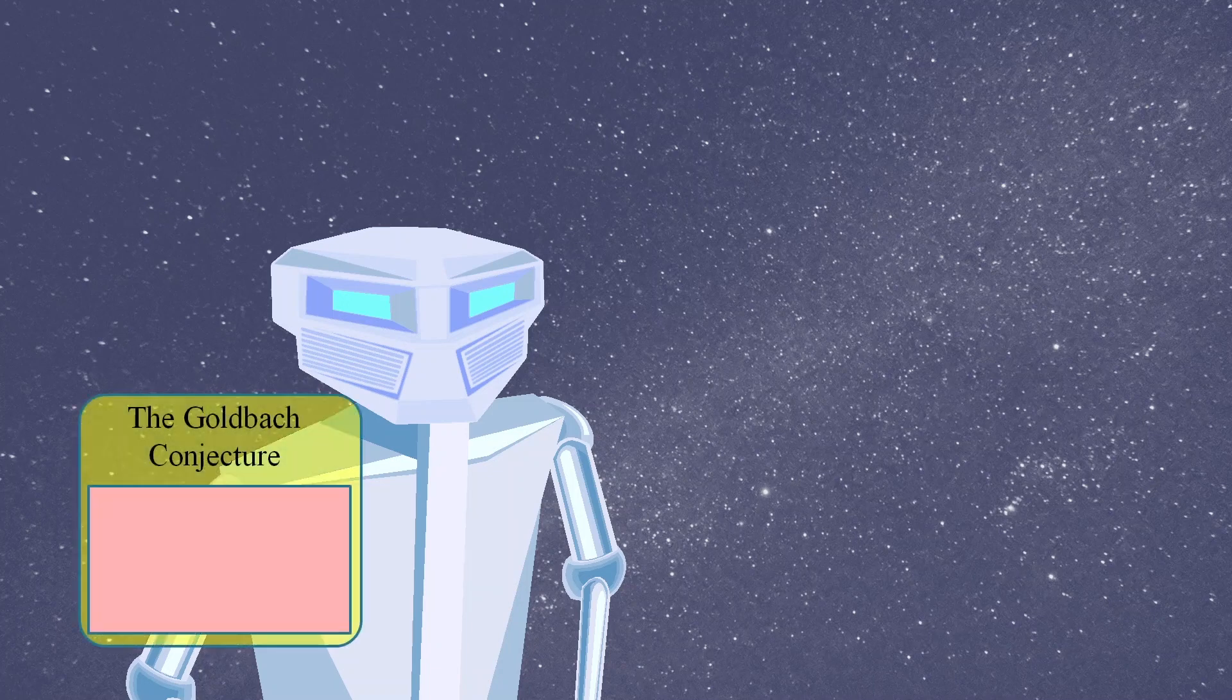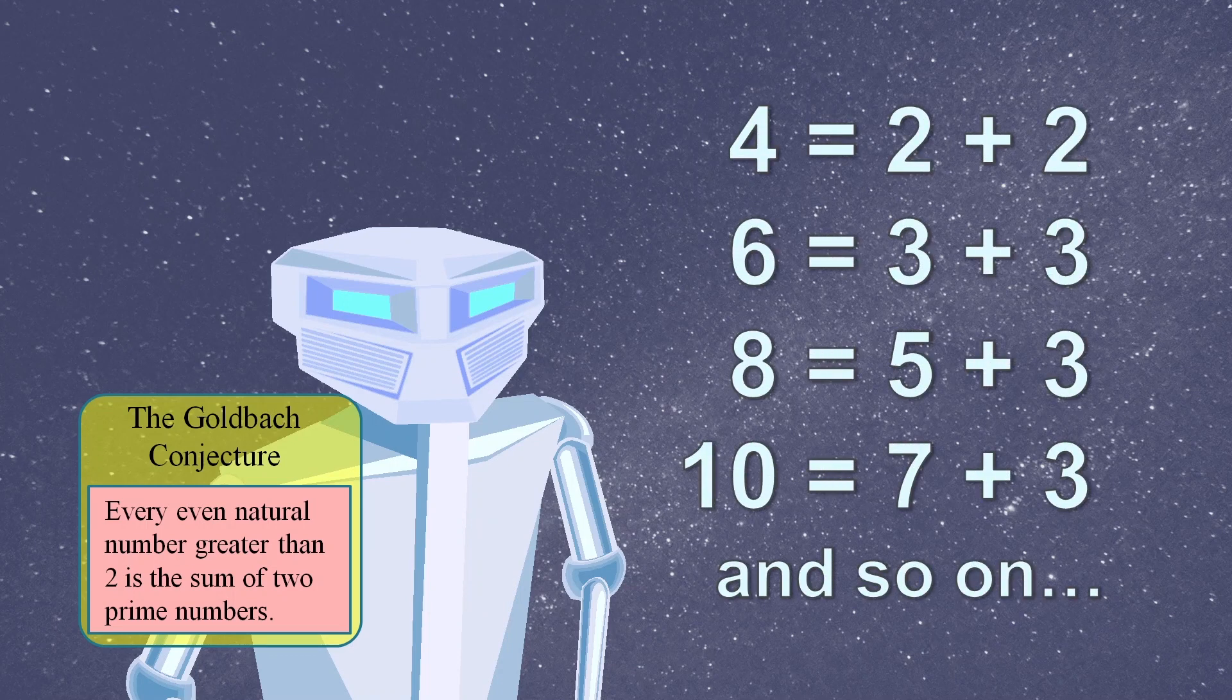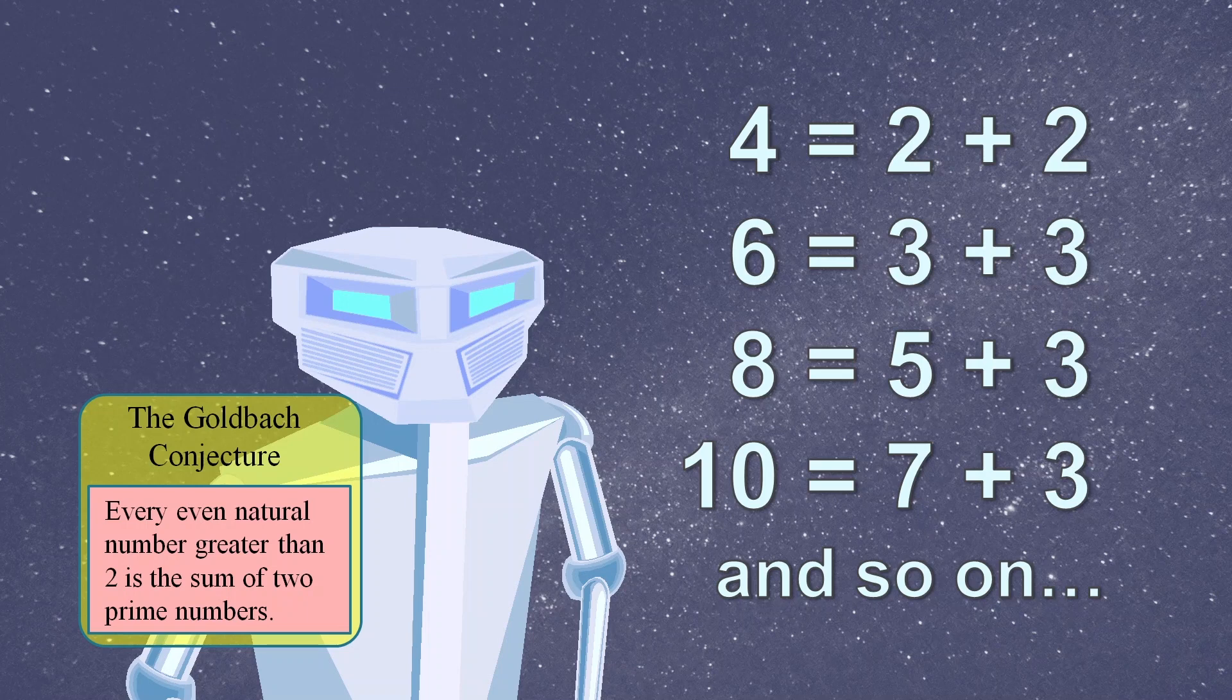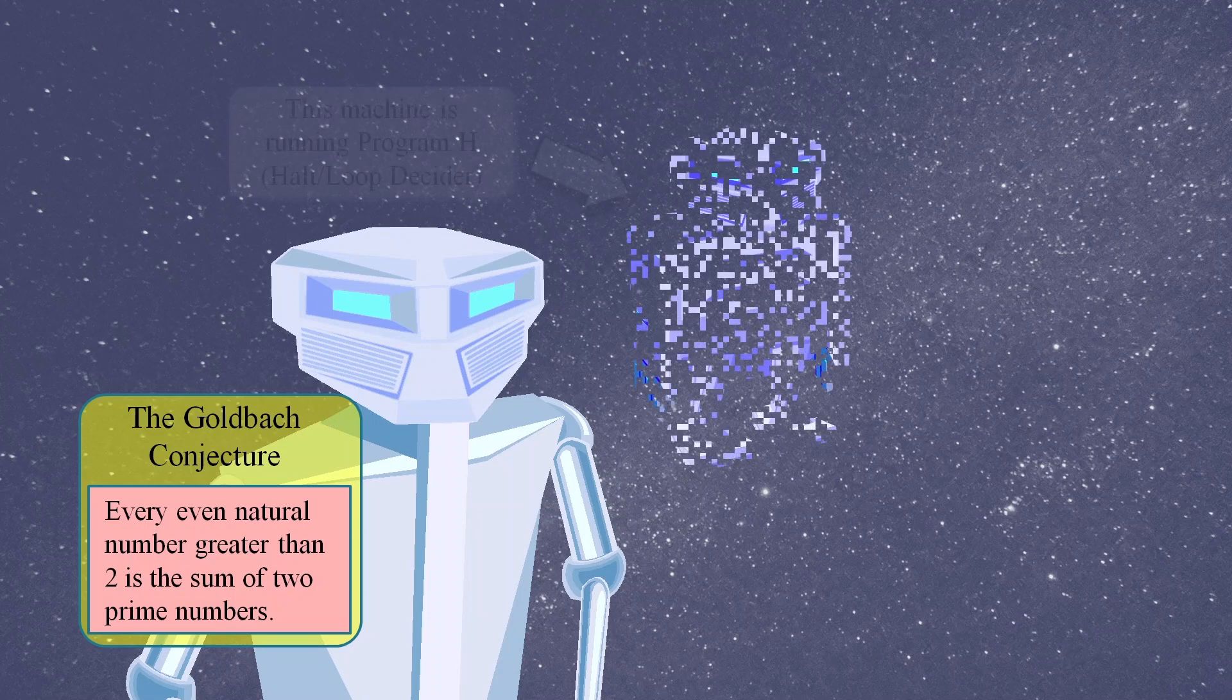She agrees that if we could determine if a program loops or halts, then we could solve other unsolved problems such as the Goldbach conjecture. The Goldbach conjecture states that every even number greater than two is the sum of two prime numbers. For example, the number ten is a sum of two primes: seven and three, or five plus five. Nobody has been able to provide a valid proof for the Goldbach conjecture.